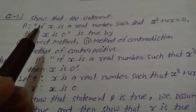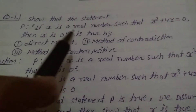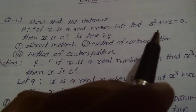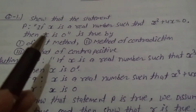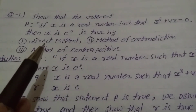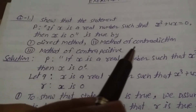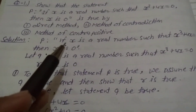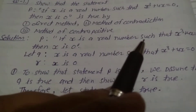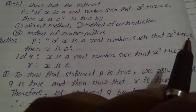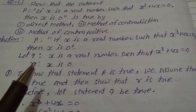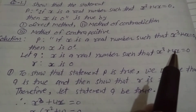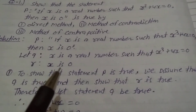Explain question number 1, Exercise 14.5, Class 11th. Show that the statement p — 'If x is a real number such that x cubed plus 4x is equal to 0, then x is 0' — is true by: first, direct method; second, method of contradiction; third, method of contrapositive. Solution: Let q be 'x is a real number such that x³ + 4x = 0', and r be 'x is 0'.